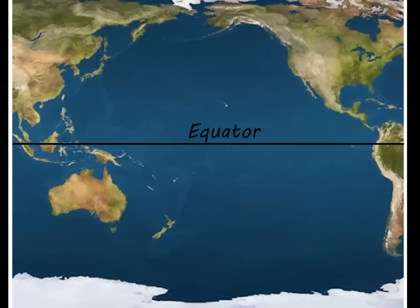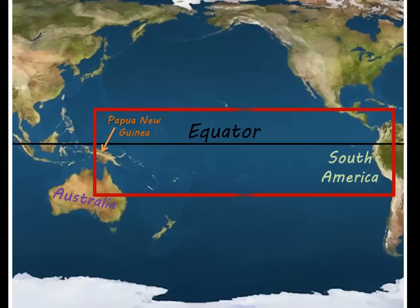Let's start with the where. The equatorial Pacific refers to the region of the Pacific between South America, Papua New Guinea, and Australia.